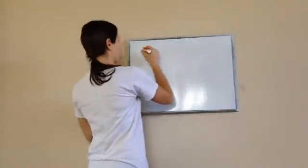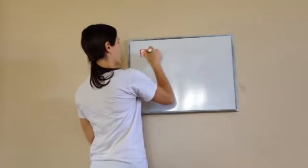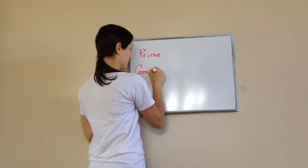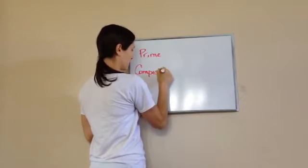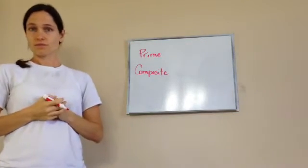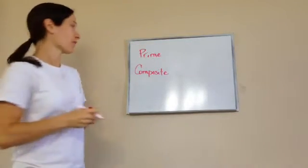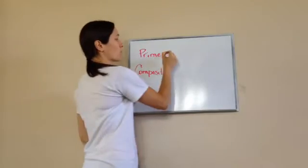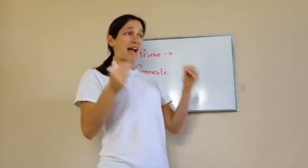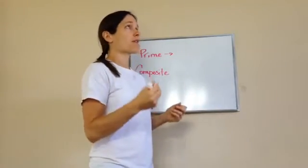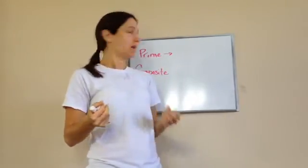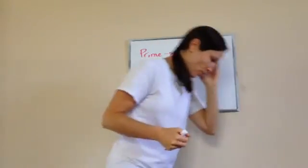Do you remember the difference, Isley? Yeah, I think prime was the one where only it and one can go into it. You're exactly right. So what a prime number is, is a factor that has 1 and itself in a problem.